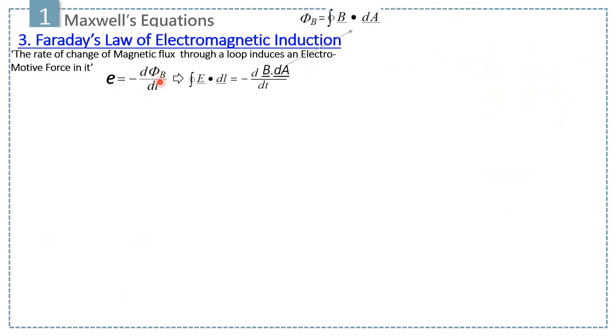We can expand this equation by replacing E by E dot ℓ and phi B with B dot A, where phi B is the magnetic flux and magnetic flux is the total number of magnetic field lines passing through a given closed surface.